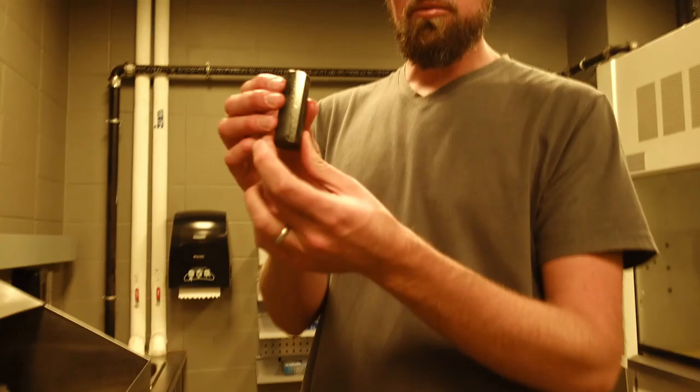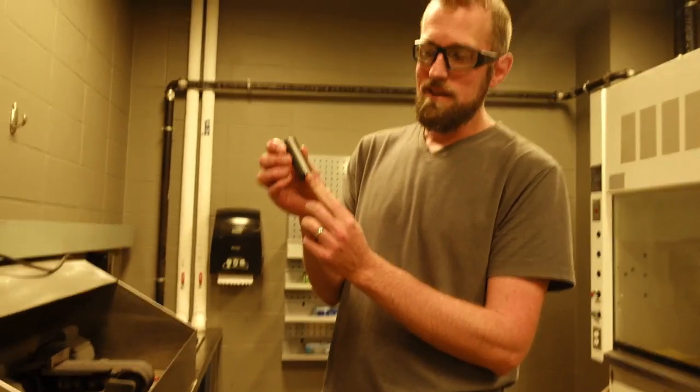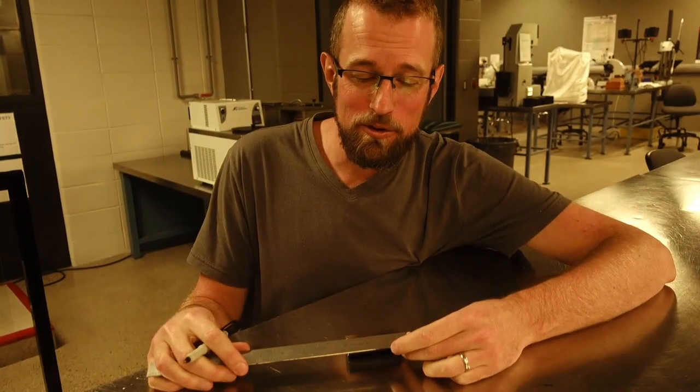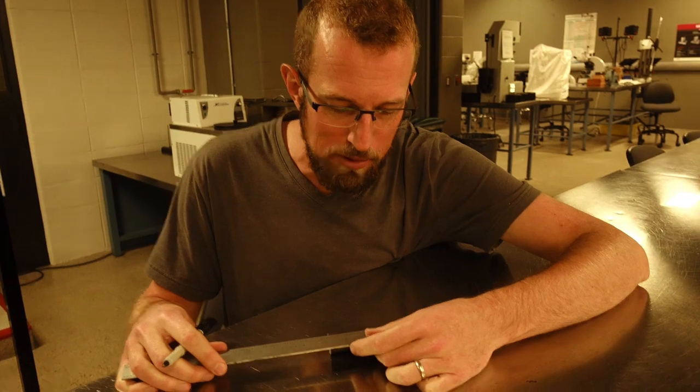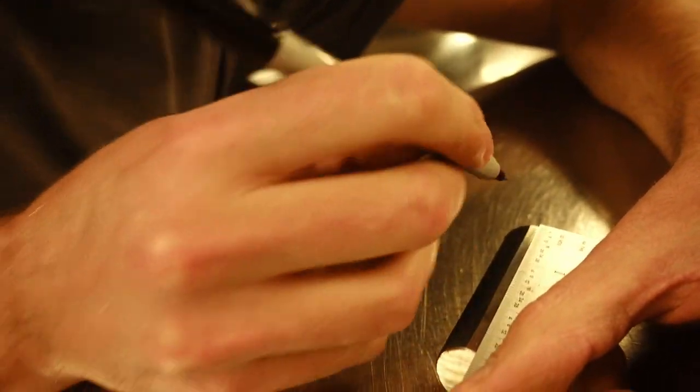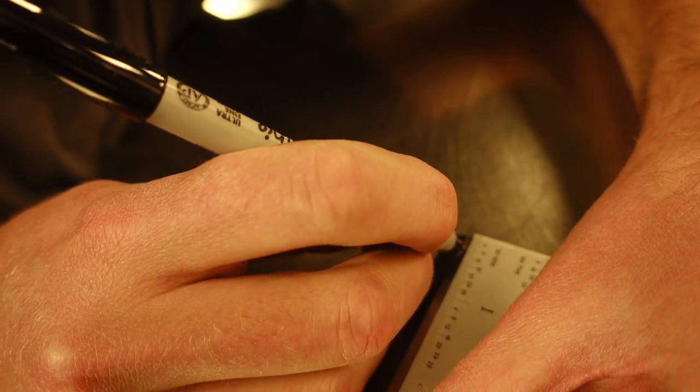So we've ground one surface down flat here. We'll be testing from the quenched end and doing a series of hardness indents along that flat portion there. So there's a standard for Jominy testing, ASTM A255. And according to that standard, we're going to test hardness every sixteenth of an inch for the first inch, and then slightly more spaced out after that. So all I'm doing here is just marking those individual points.